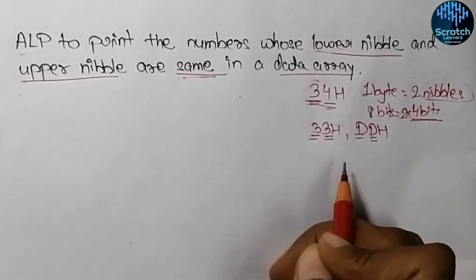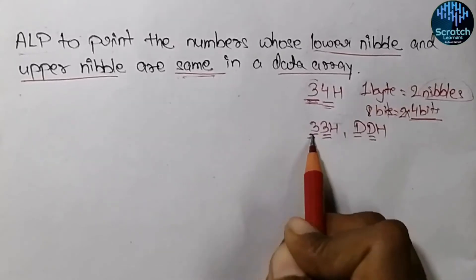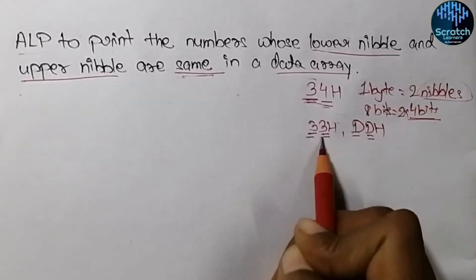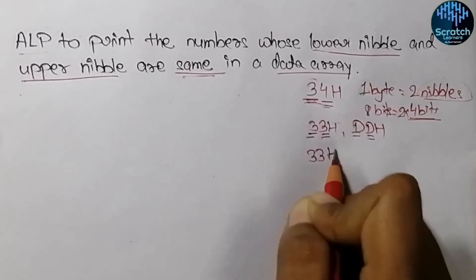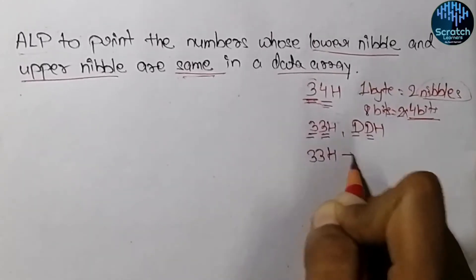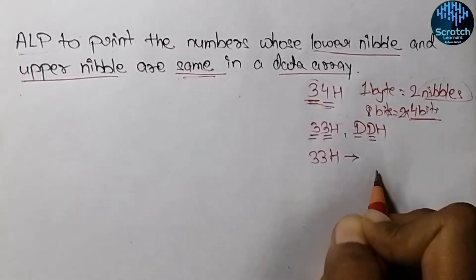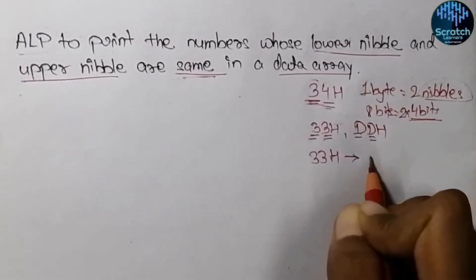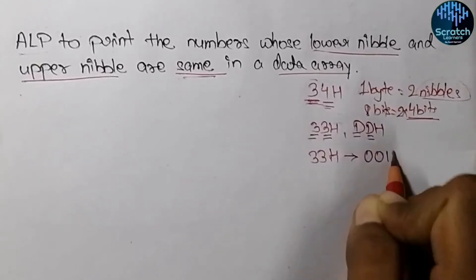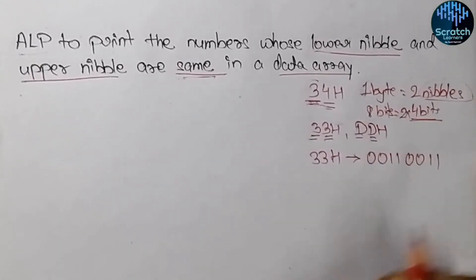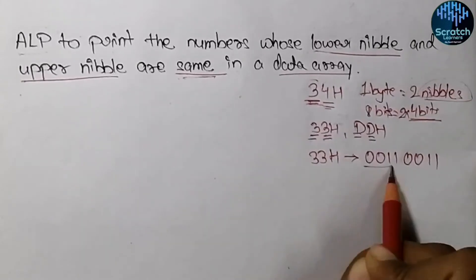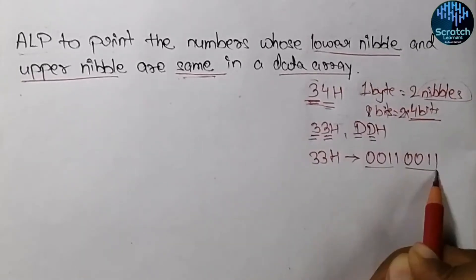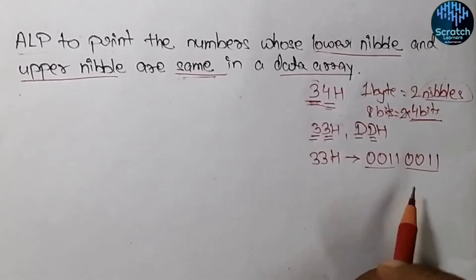Now let's see how to find out whether both nibbles are same or not. Let's consider the example 33 hex. First we will write it in binary format: 0 0 1 1 0 0 1 1. You can see these two nibbles are the same — now let's see how we do the checking.